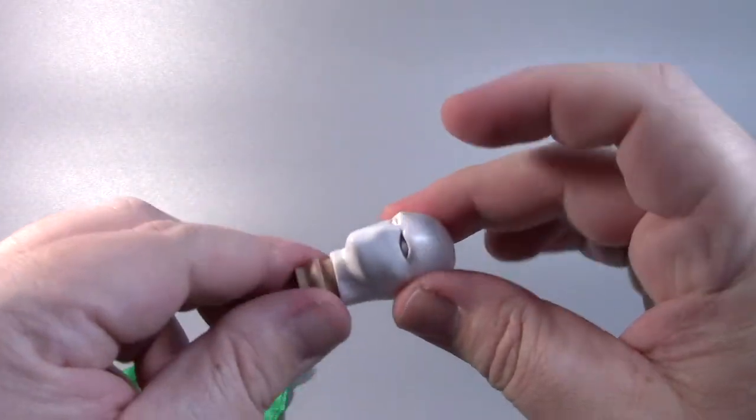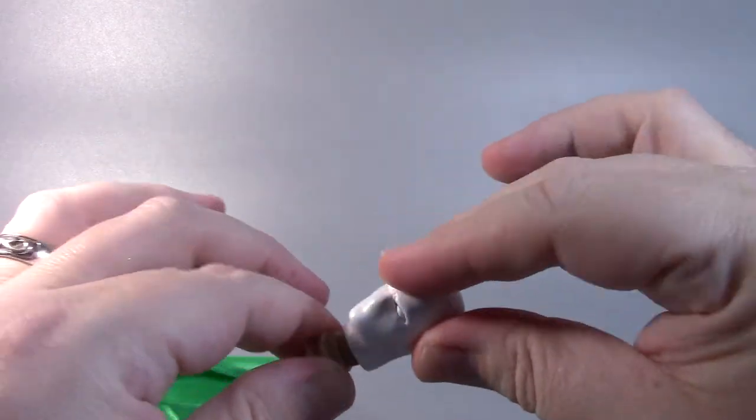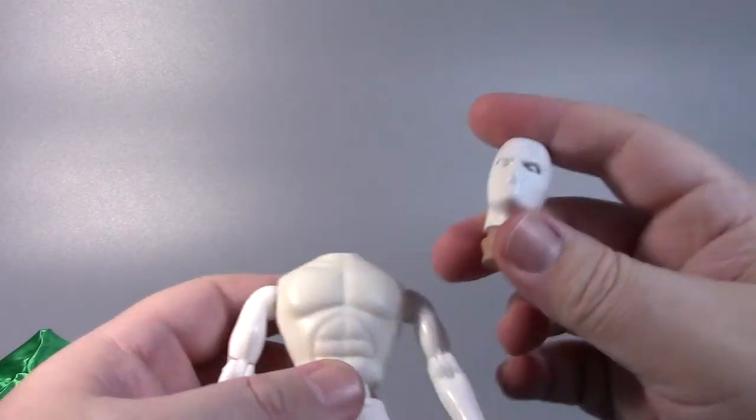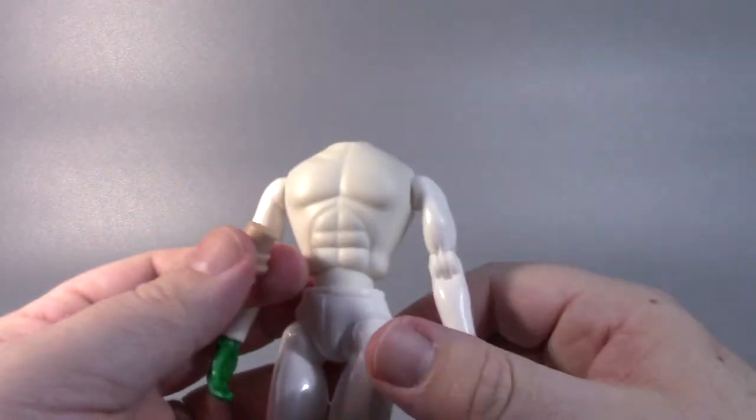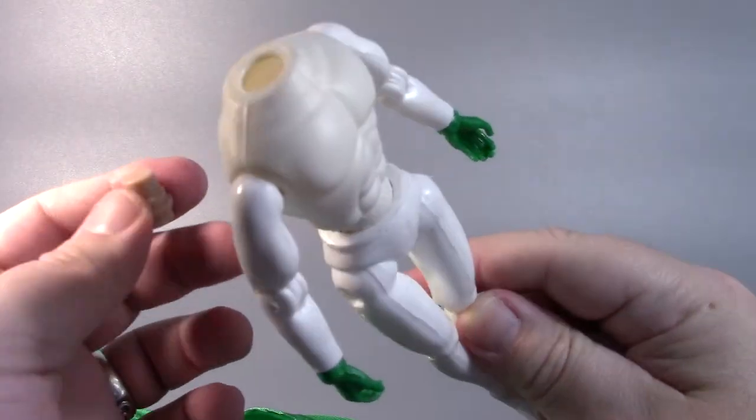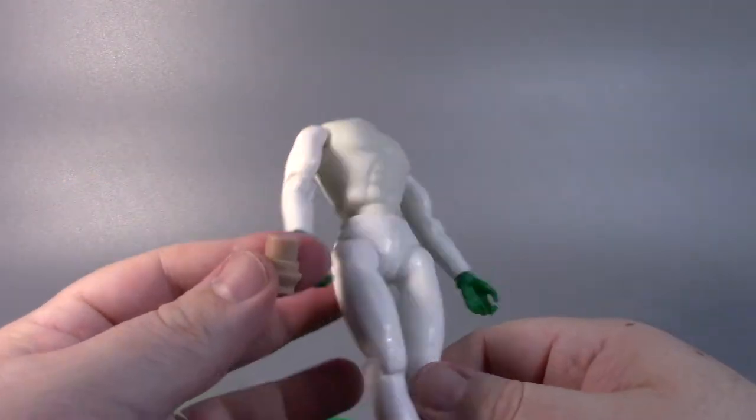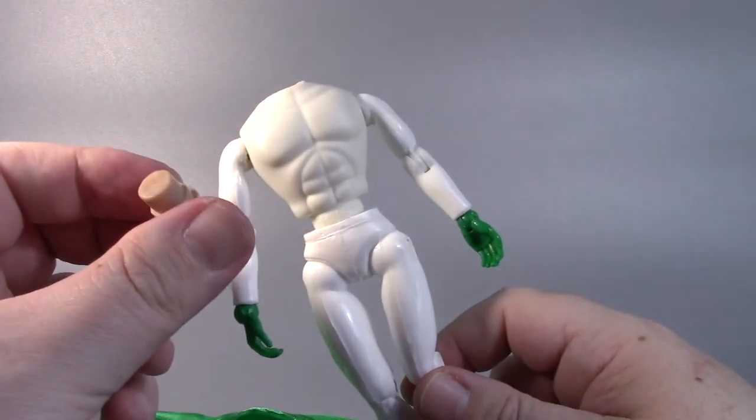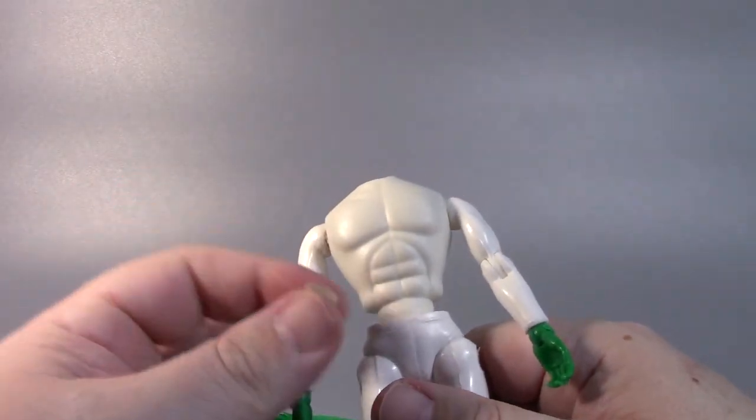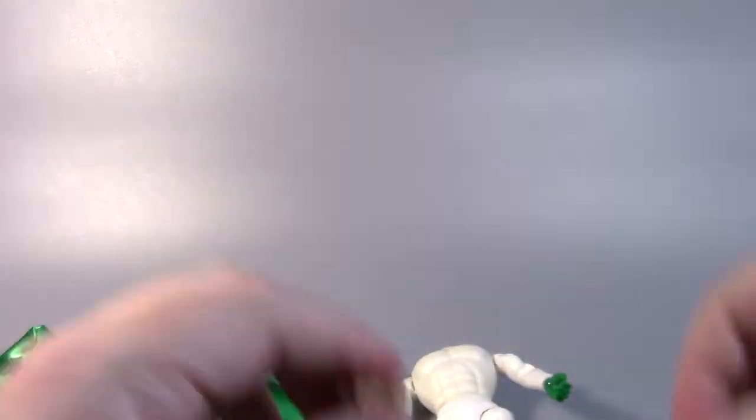But before I do that, what I want to do is I want to glue these two pieces together because if I should be messing with it at some point and pull the head off, this part will fall into the chest and I'll have no choice but to take it apart to try to get this out.